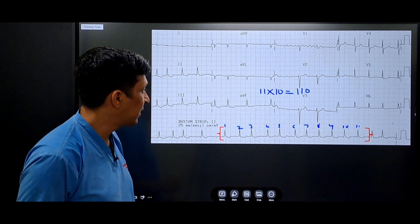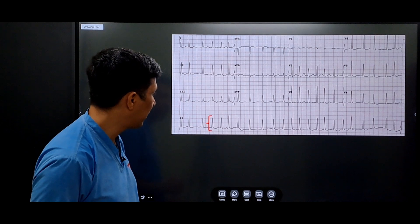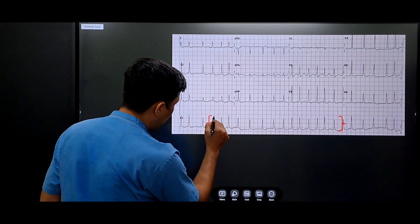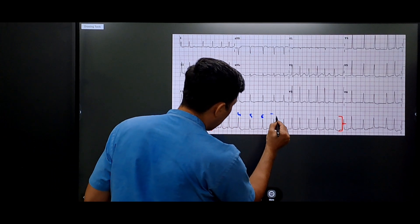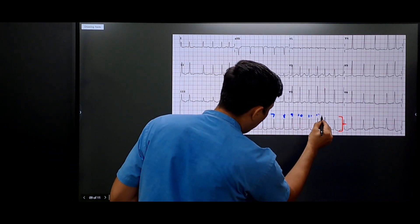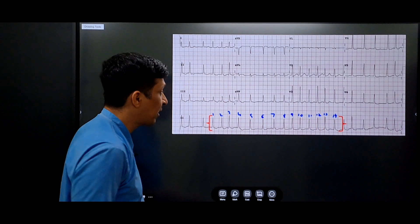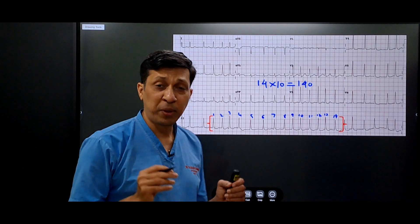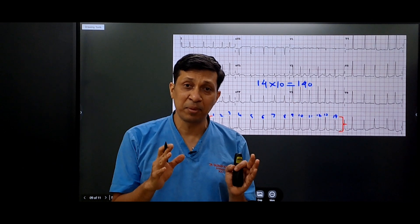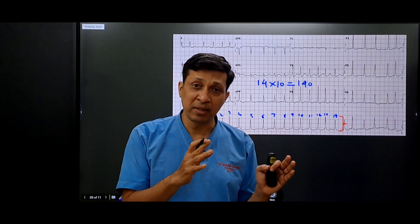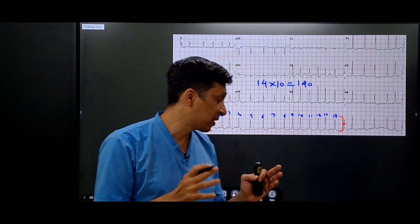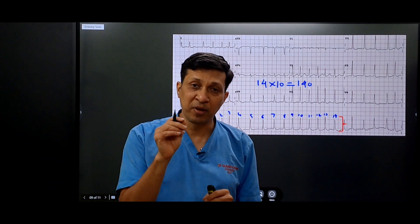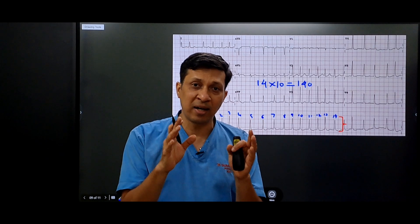Now we will see another ECG. If we calculate the 30 large boxes, the number of R waves are: 1, 2, 3, 4, 5, 6, 7, 8, 9, 10, 11, 12, 13, and 14. So the heart rate will be 14 × 10 = 114. One thing to keep in mind with this method is that there can be some variation when used by two different people, because it depends on from where you start counting your 30 large squares. But approximately the heart rate will be the same.